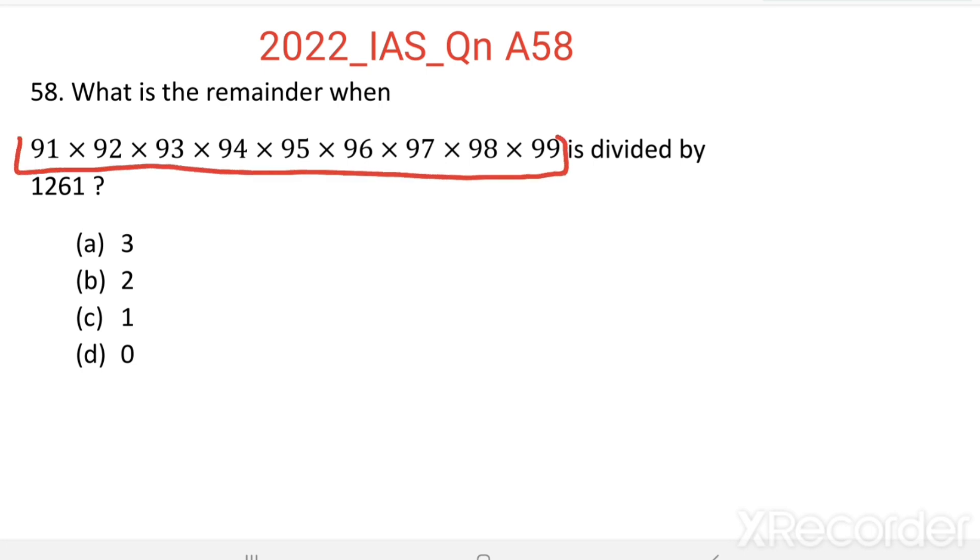So let us find it: 91×92×93×94×95×96×97×98×99 whole divided by 1261.